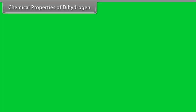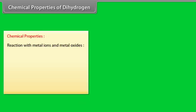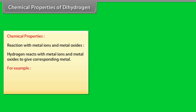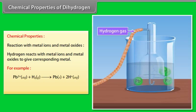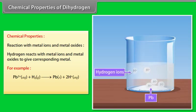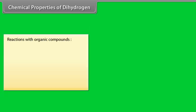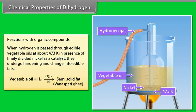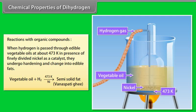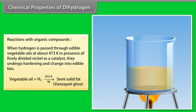Chemical properties of dihydrogen. Reaction with metal ions and metal oxides: Hydrogen reacts with metal ions and metal oxides to give corresponding metal. Reaction with organic compounds: When hydrogen is passed through edible vegetable oils at about 473 Kelvin in presence of finely divided nickel as a catalyst, they undergo hardening and change into edible fat.